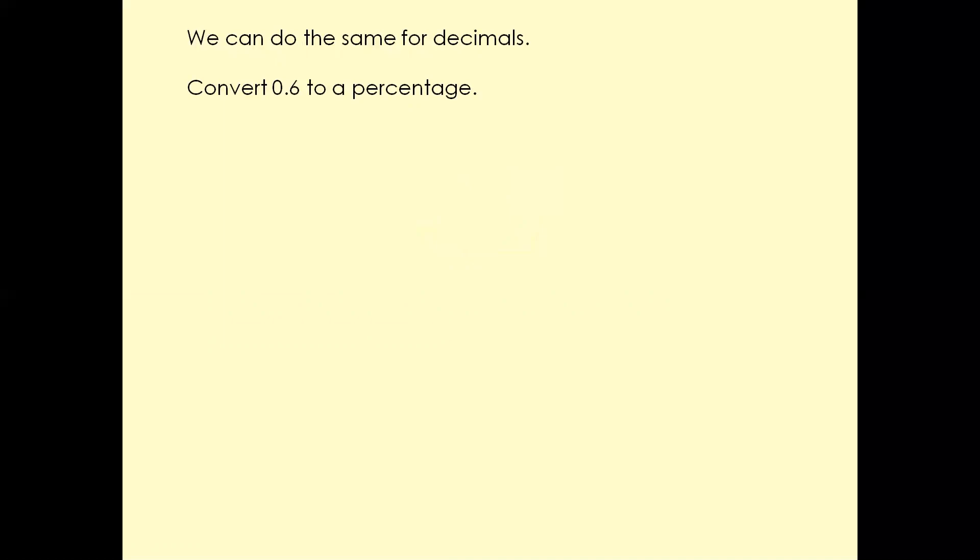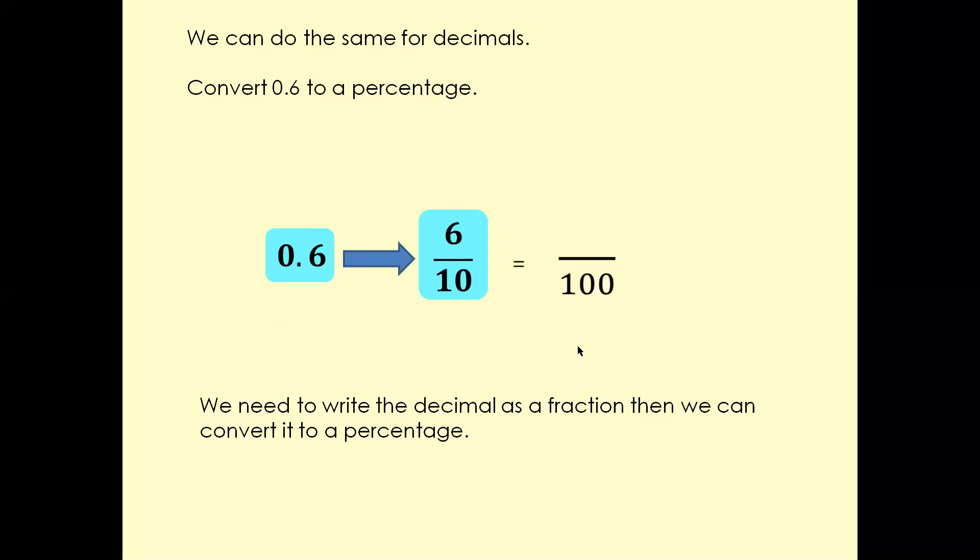Let's have a look at this question. Here we've got a decimal number. So we're going to convert a decimal number to a percentage. Now what we have to do first, we need to write the decimal number as a fraction first. So 0.6 is 6/10 or 6 over 10. And now we have to go from 10 to 100. And how can we do that? So 10 times 10 is going to be 100, and we're going to use the same number to times by the top number. So 6 times 10 is going to be 60, and the answer is going to be 60%.